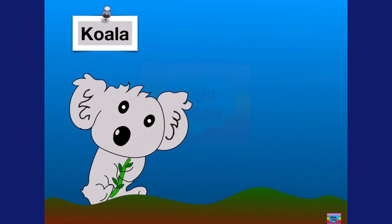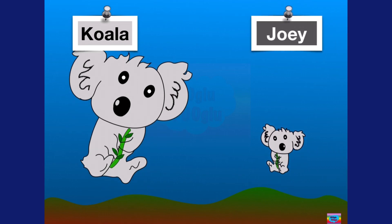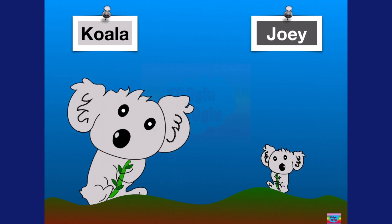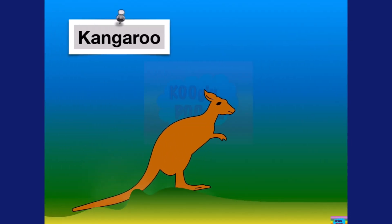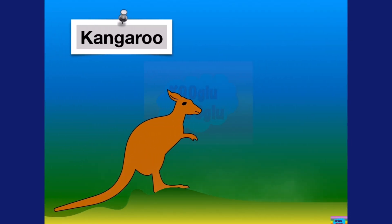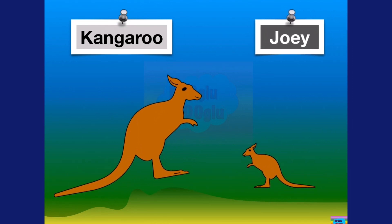Here we have a koala. A baby koala is called a joey. Here we have a kangaroo, and a baby kangaroo is also called a joey.